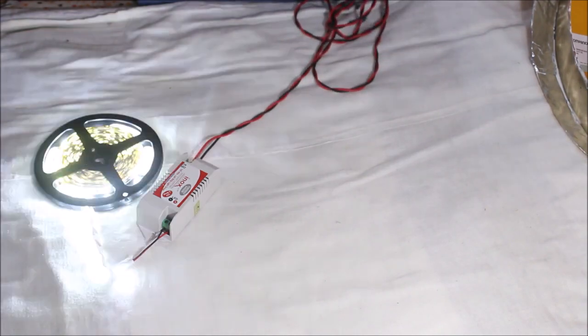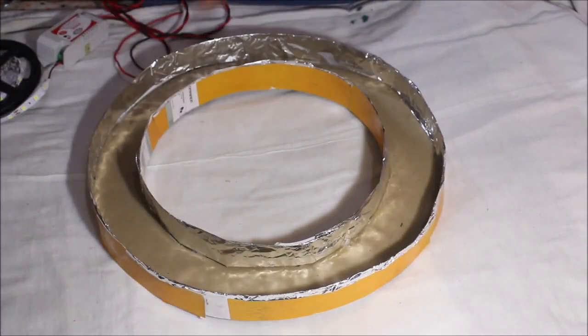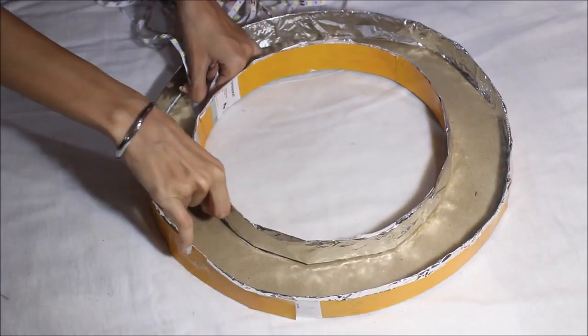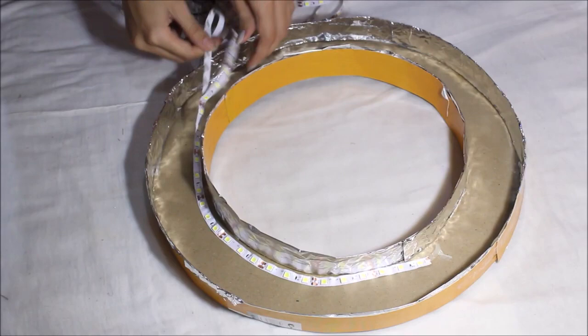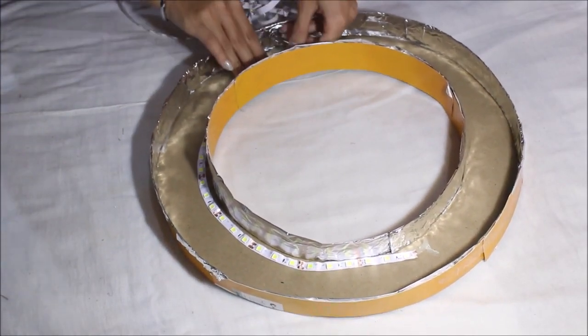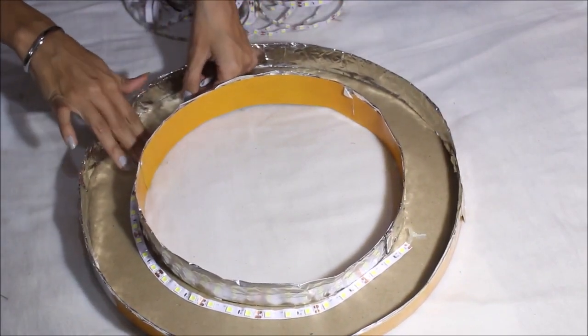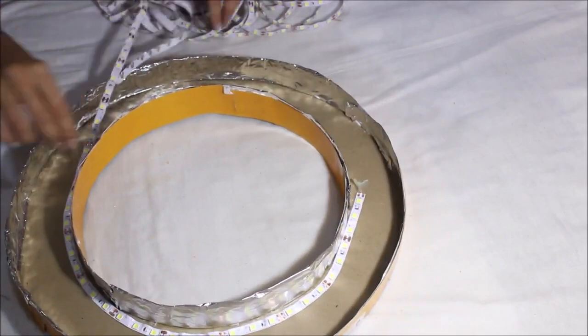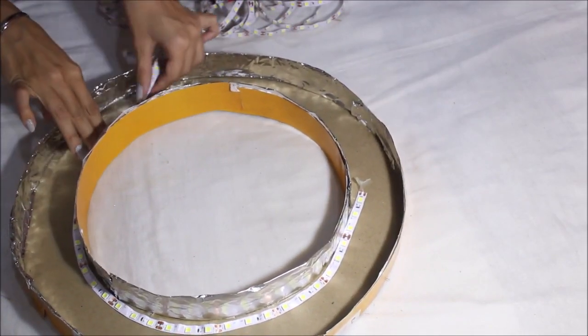So if the LED light is working, then remove it from the plug point and start unwinding it. Start sticking it at the base of the ring that you made this way. So my LED light was five meters and it has tape under it, so you can remove the tape and start sticking it on the base of the ring that you already made.